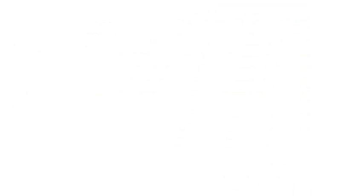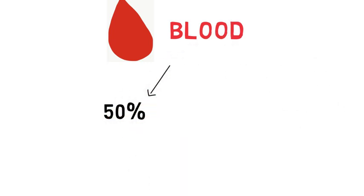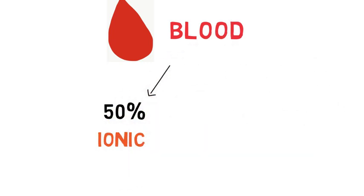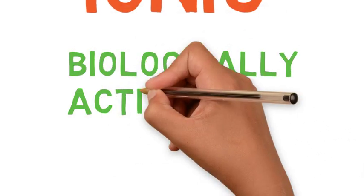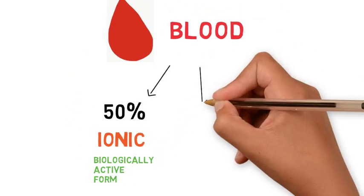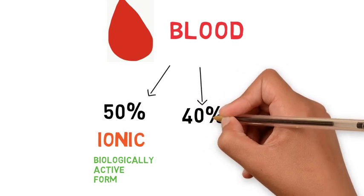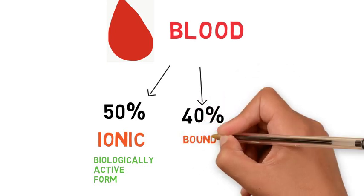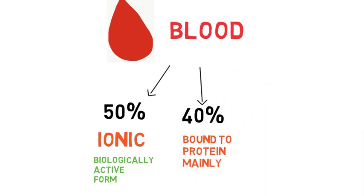Out of that within blood, 50% is ionic calcium which is the biologically active form, 40% is bound to protein, mainly albumin.